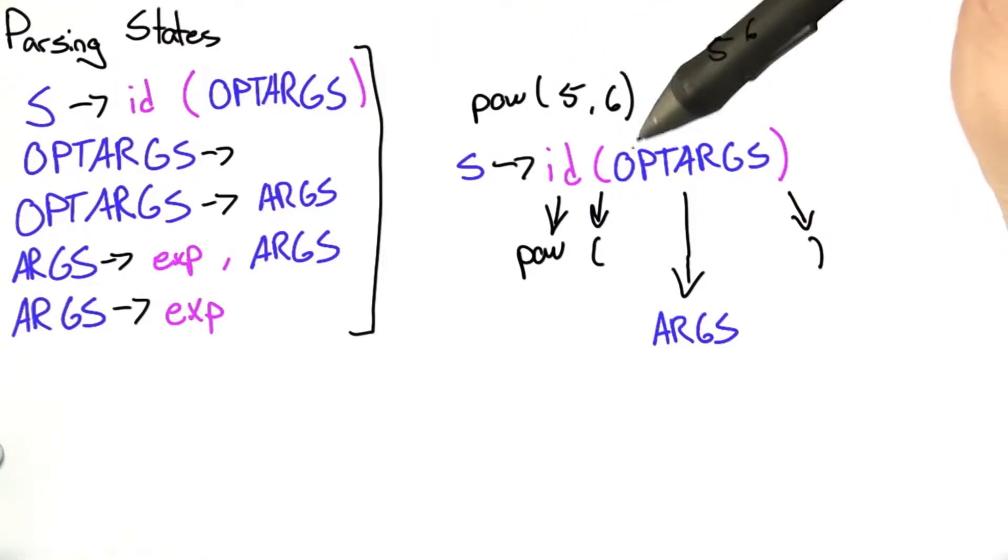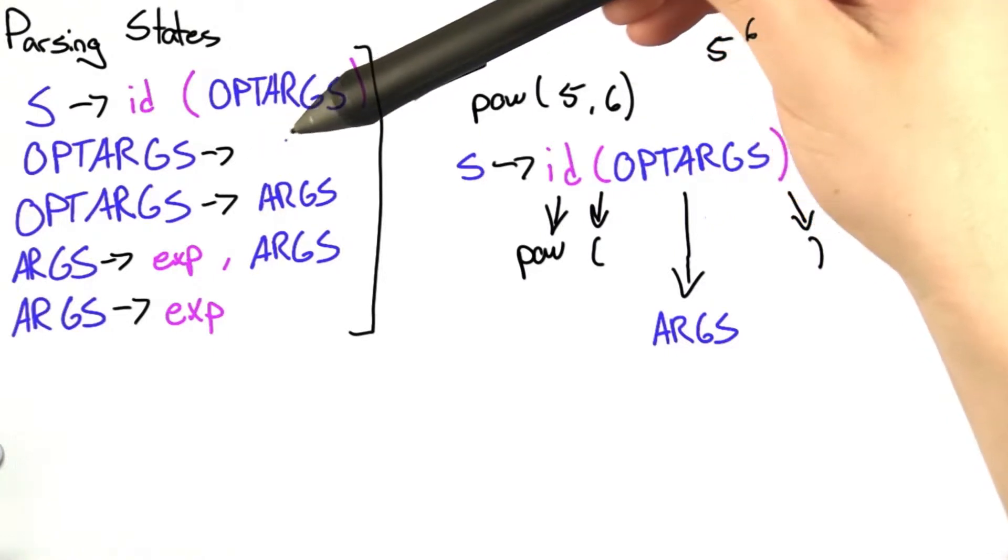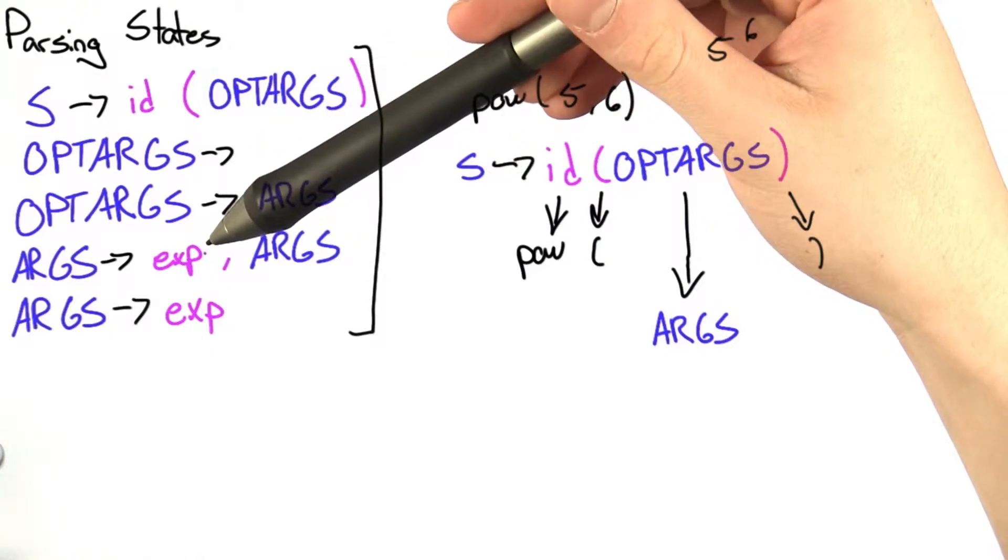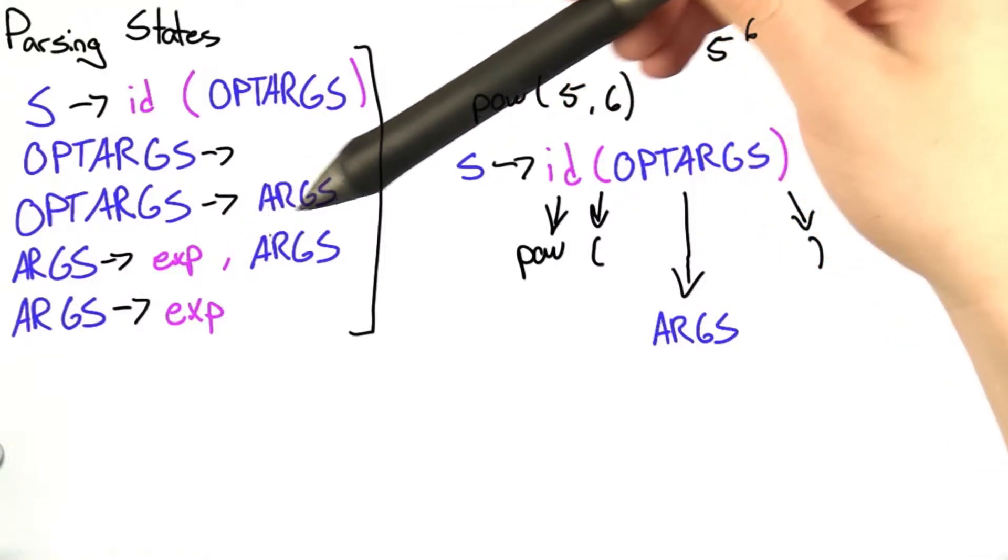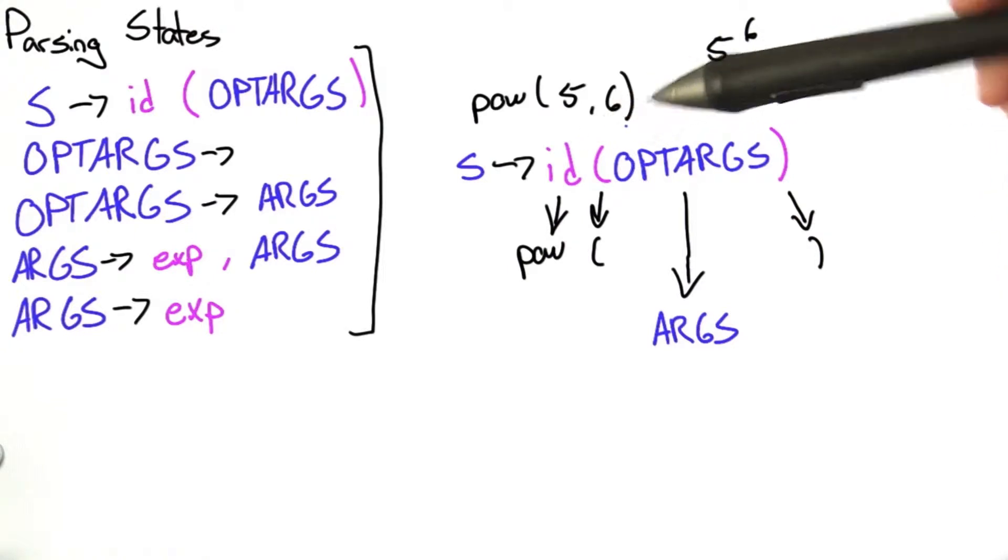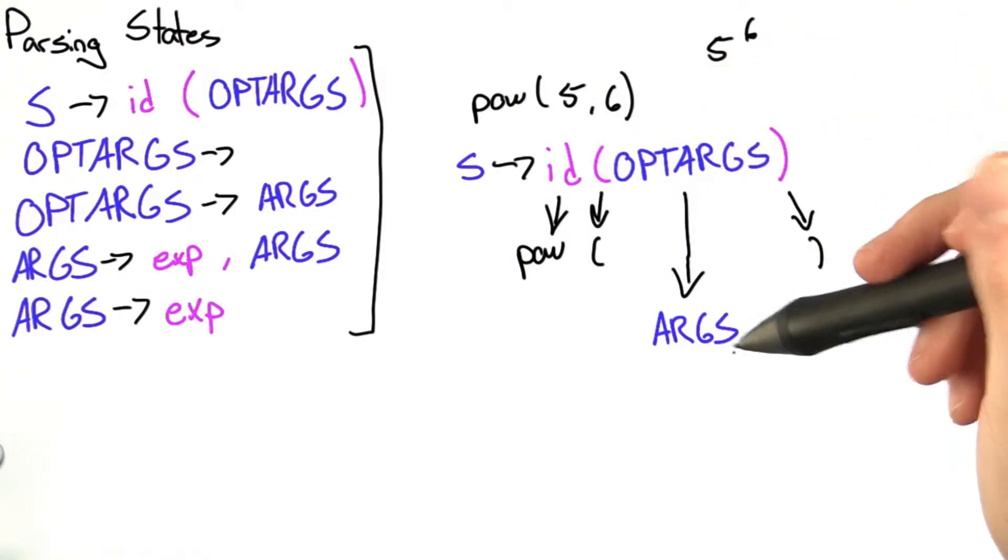We don't have to have anything here. As the title implies, it's optional. It could go right to the empty string, but we do have arguments. In this case, we're going to have some kind of expression, or an expression followed by a comma with more arguments. In this case, we have 2.